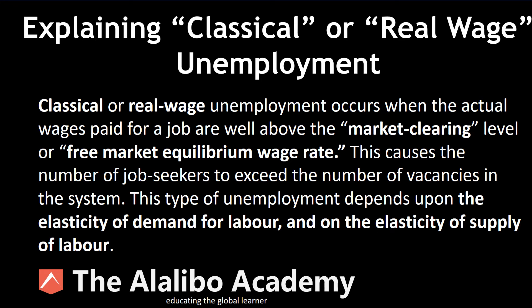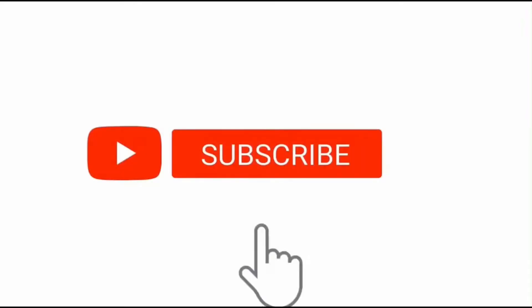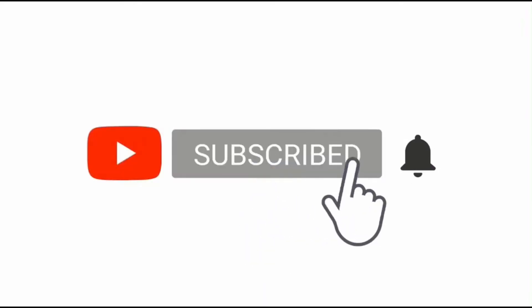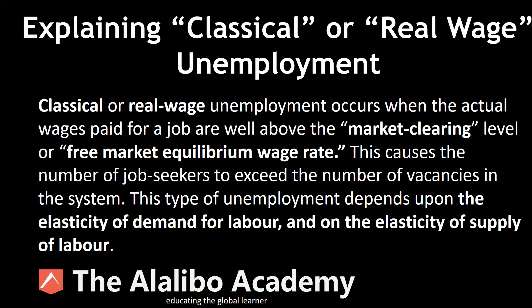In simple terms, we want to understand what classical unemployment is, sometimes known as real wage unemployment. This is a very interesting and unique type of unemployment, and we want to see how it impacts the workplace. Classical or real wage unemployment occurs when the actual wage paid for a job is well above the market clearing level.